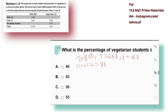Both class 11 and class 12 have 80 students each. Vegetarians in class 11 is 50 percent of 80, which is 40. Now for the secondary section, vegetarians are 55 percent of 640.